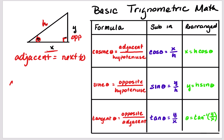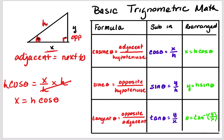If I take cosine theta, which is x over h, I can solve for x by multiplying each side by h — the h's on the right side cancel out — so x becomes h cosine theta.